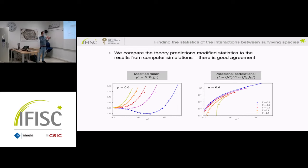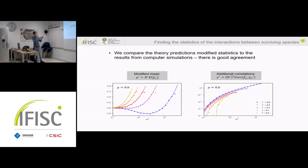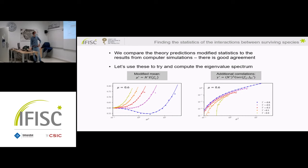We can find all the statistics of the reduced interaction matrix using this approach, evaluating them in terms of quantities from dynamic mean field theory — response functions, correlation functions, and mean abundance from the effective single-species process. Interestingly, the statistics of interactions between surviving species are modified by removing extinct species — which species go extinct depends on their interactions with all other species, creating a feedback. Very importantly, we see additional correlations between elements J_ij and J_ki in the surviving community which were not present in the initial matrix.